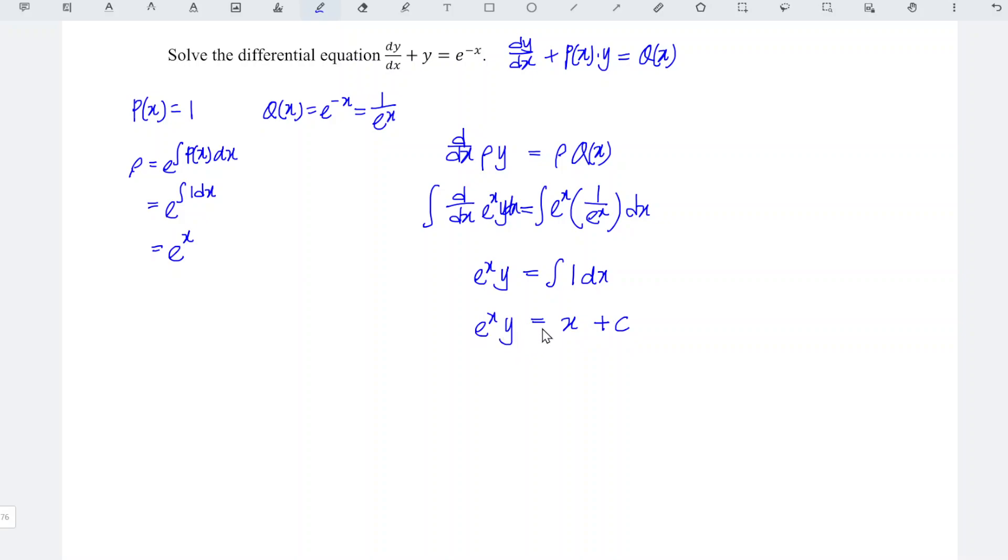Which means that y equals x plus c divided by e^x. We divide both sides by e^x and obtain e to the power of negative x times the quantity x plus c, or simply e^(-x)(x + c), and we're done. That's all for this video. Thanks for watching, hope you liked it.